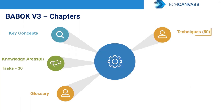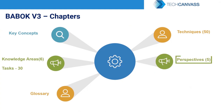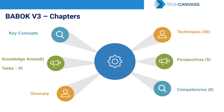There are 50 techniques described, which are also used in each of the tasks described in the knowledge areas. Then we have five perspectives described in the perspectives chapter. Finally, we have underlying competencies, which are needed to perform business analysis activities. So these are the six chapters.